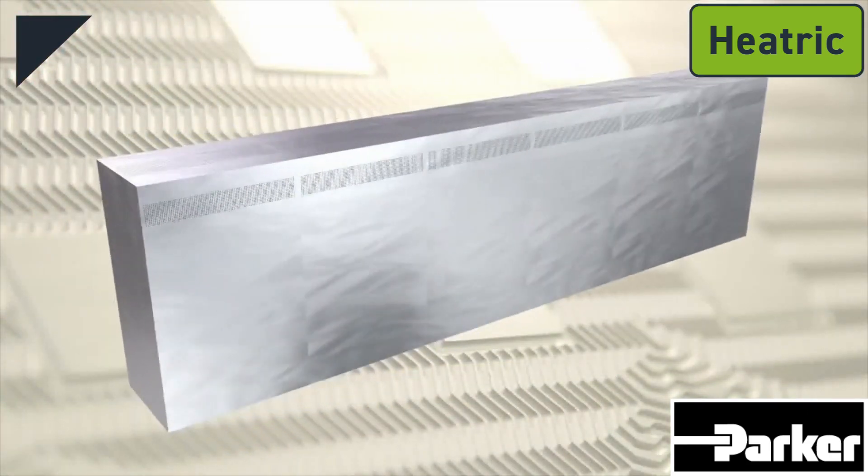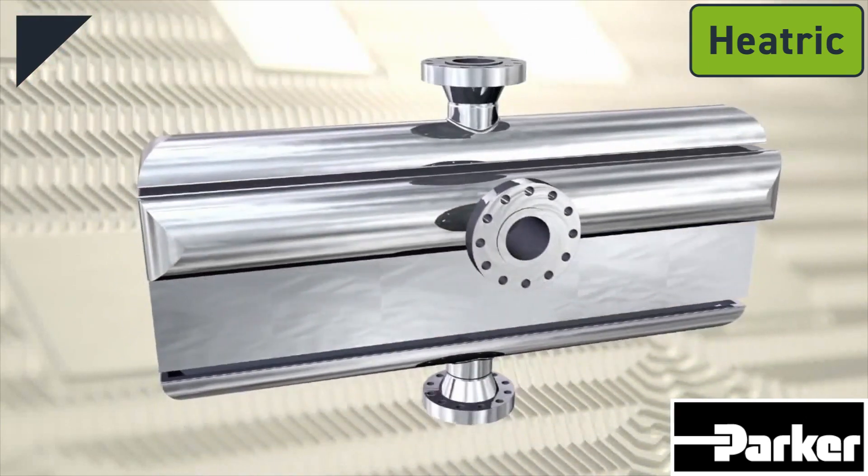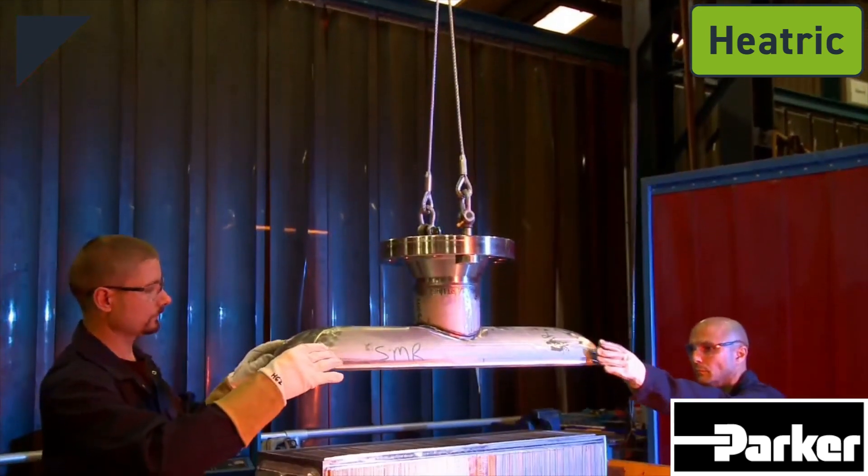Once the core is complete, headers including prefabricated nozzles are attached. These are half cylinders which distribute the fluids into the exchanger core.